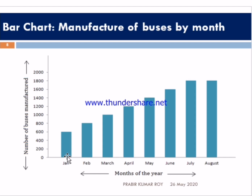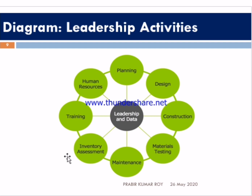Now let us go to another thing called a diagram. A diagram is a simplified drawing showing the appearance, structure, or working of something — a schematic representation. Here in this diagram, we can see what the leadership activities are. A leader has to plan, design the company, construct roles, provide maintenance, and provide training to employees. Whenever you describe a diagram, you clearly define everything — what the activities are.